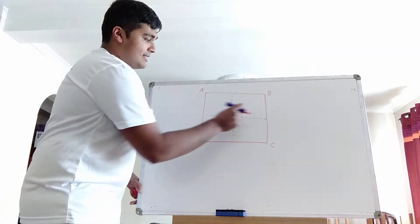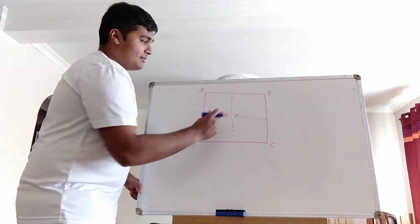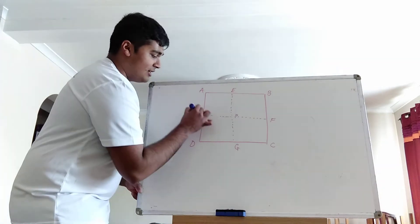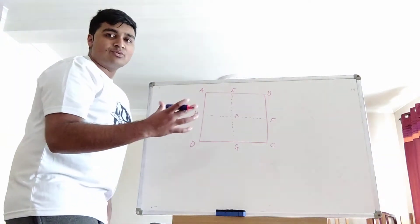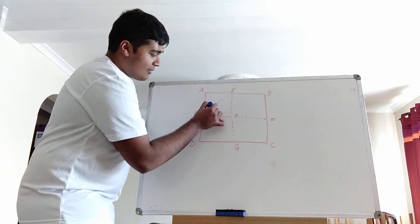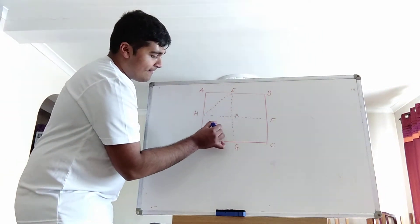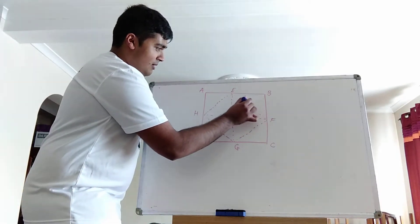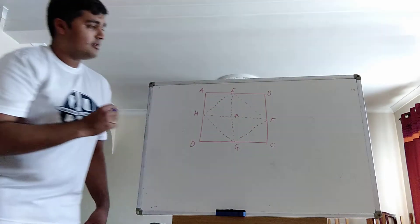Let's label these vertices of these smaller squares. So let's call this e, f, g, and h. And I guess one last natural square that comes out of this diagram is this square here.